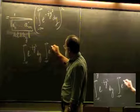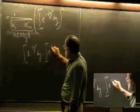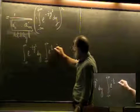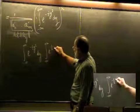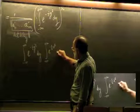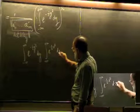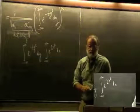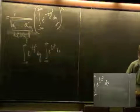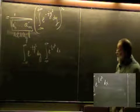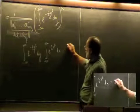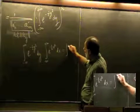He found this integral by considering it squared. We consider the squared integral, and rename the variable of integration in the second integral as x. This is just the same as computing a double integral.